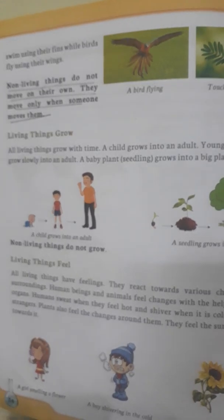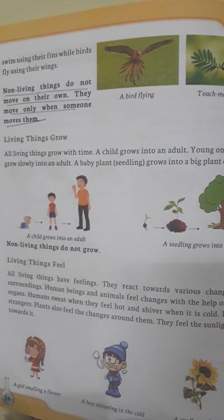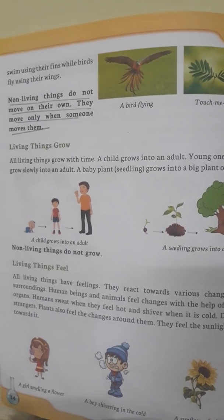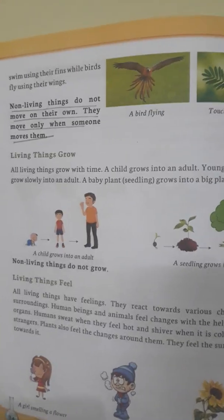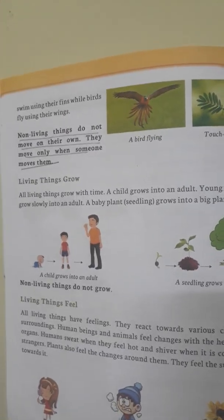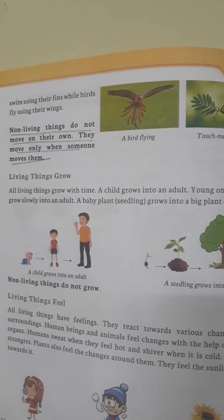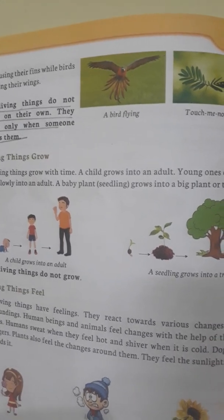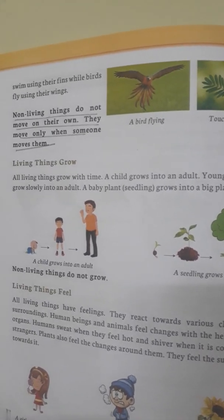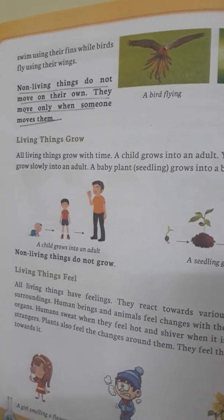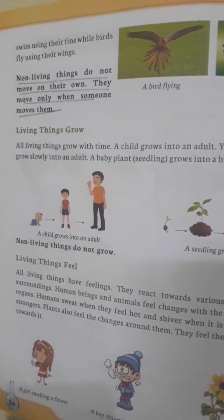Non-living things do not move on their own; they move only when someone moves them. For example, if you want to displace a table from one place to another, it will not move on its own. You have to displace it yourself or with the help of someone. Similarly, a car cannot move on its own unless a driver operates it.